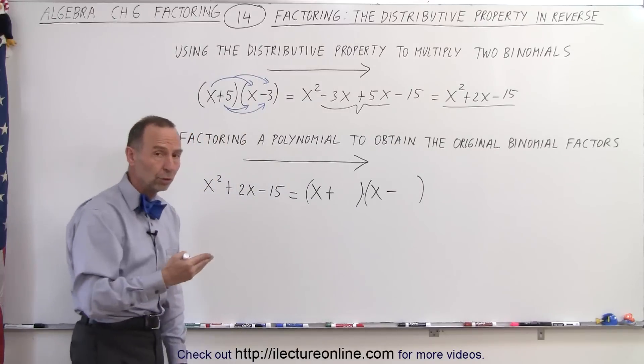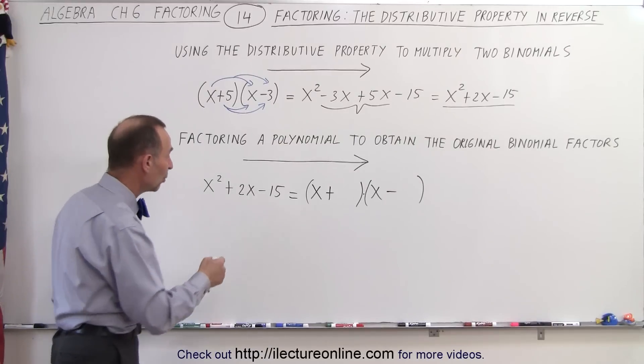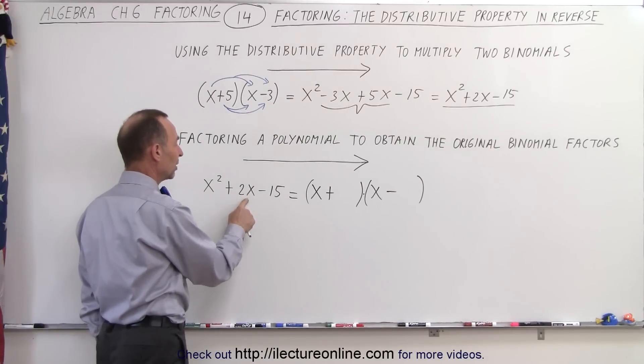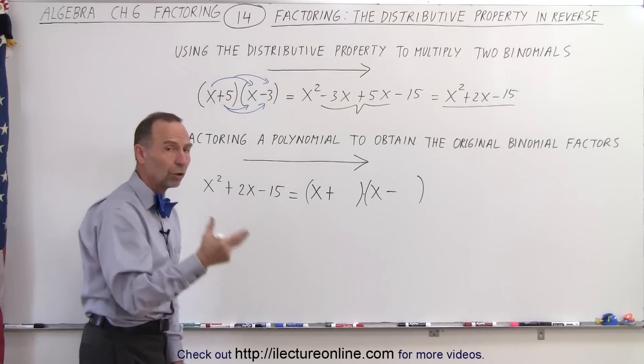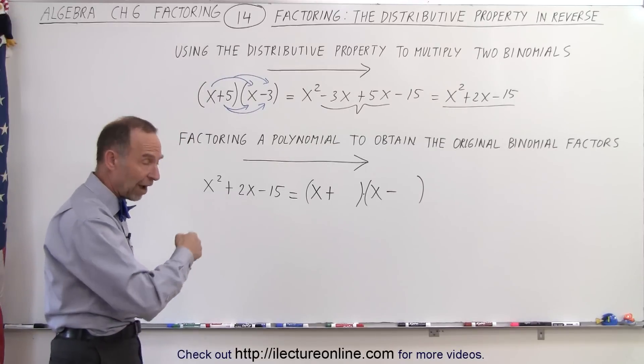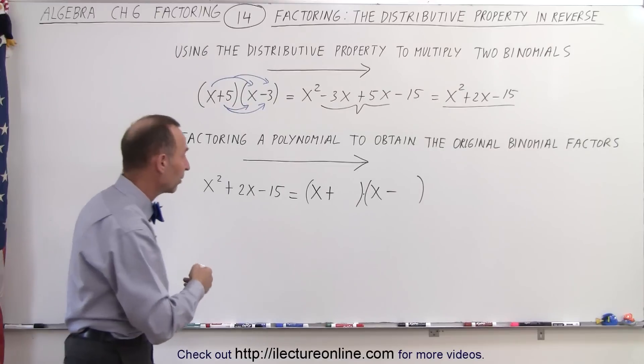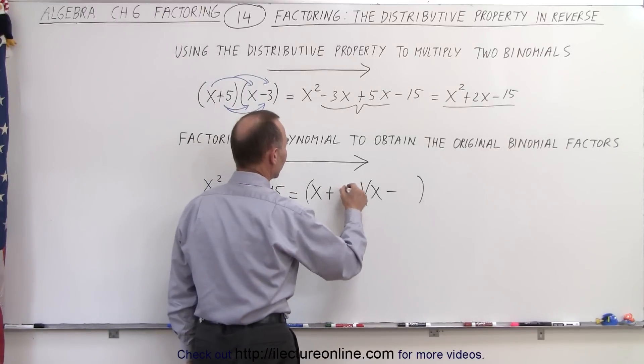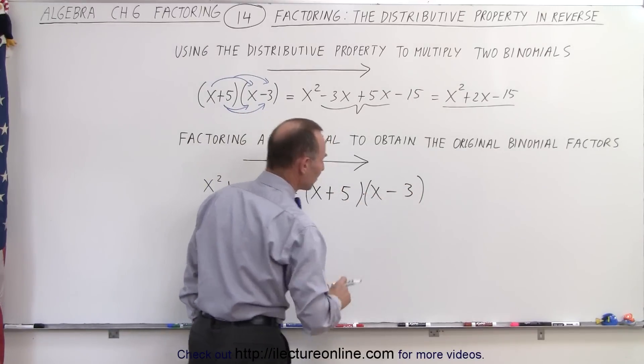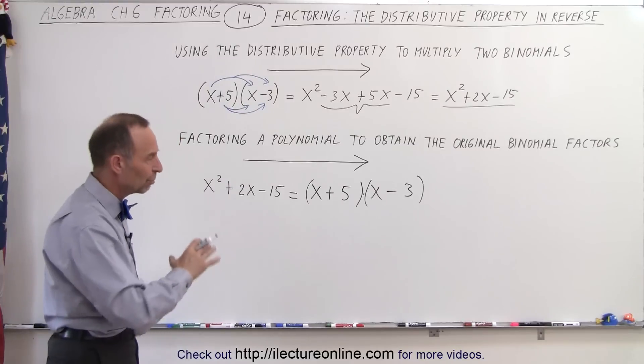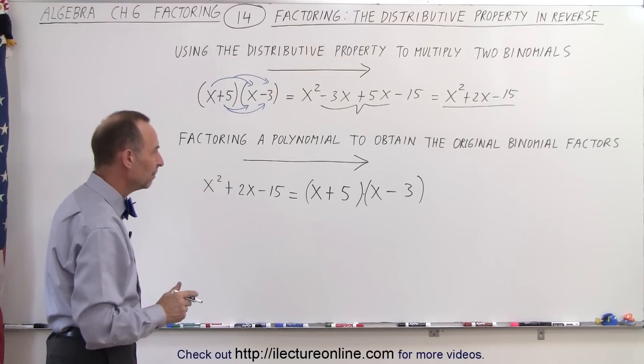The way we find out which of the two, the 5 or the 3, is positive—we take a look at the middle term. If the middle term is positive, then the largest of the two, in this case 5 instead of 3, will be a positive number. So we plug in plus 5 and minus 3. We'll show you those techniques in much more detail in the videos to come.